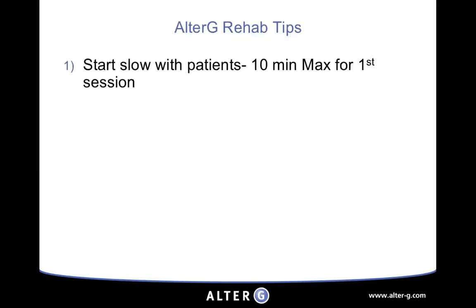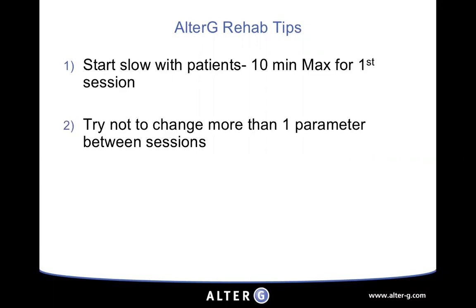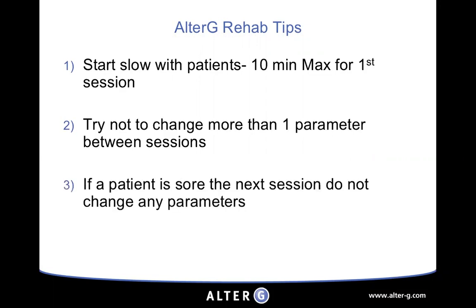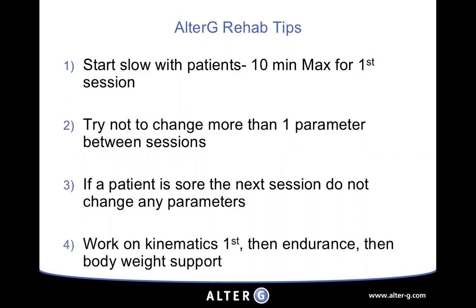Start your patient slow in the anti-gravity treadmill — about 10 minutes maximum. Don't change more than one parameter between sessions. Remember not to exhaust your patient; you want to leave time for overground training because if they're exhausted they can't practice in their real-life situation. If you change more than one parameter it gets confusing to know which one is affecting the patient. If they're sore, don't change any parameters for the next session. I work on kinematics first — step length and stride length — then endurance by increasing time, and lastly body weight support.